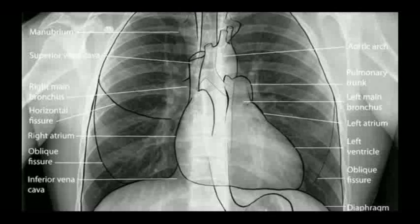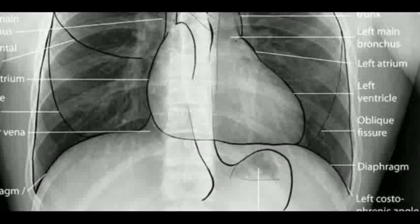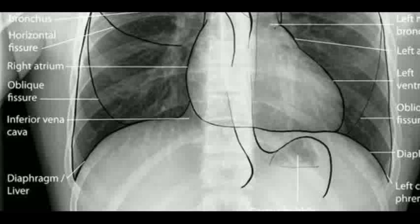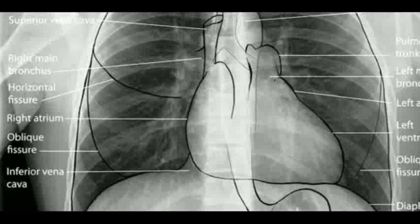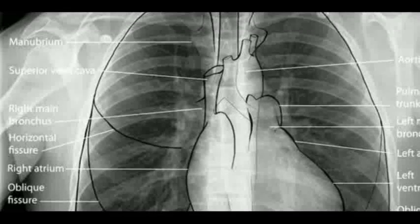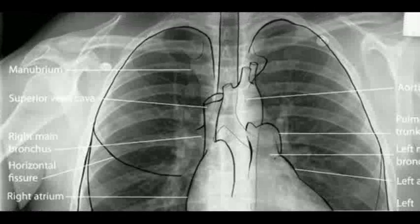Then we have the heart. We have the aortic arch as discussed previously, then the pulmonary trunk and left main bronchus, left atrium, left ventricle, and the diaphragm from below. At the corner we have the left costophrenic angle. Similarly on the right side we have the diaphragm, below which we have the liver. On the left side we have the stomach and on the right side the liver, and the right costophrenic angle. Above we have the inferior vena cava near the medial side of the right lung, then the oblique fissure, right atrium, horizontal fissure exclusive to the right lung, then the right main bronchus, the superior vena cava, and the manubrium at the center.